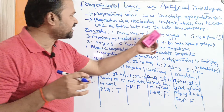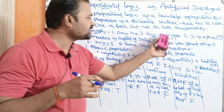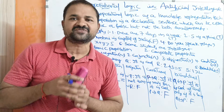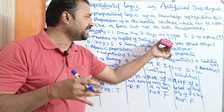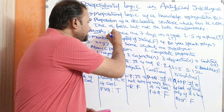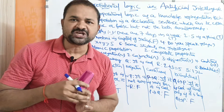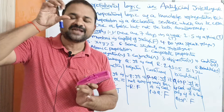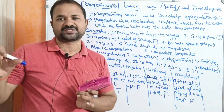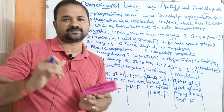Let us take several sentences. 'There are seven days in a week.' Yes, in a week we have seven days. It is true. So we can say that it is a proposition. A proposition means the truth value may be either true or false, but it can't be both.